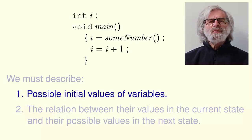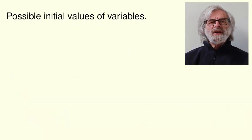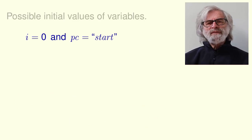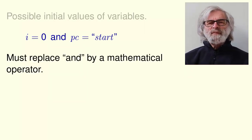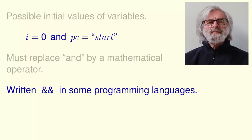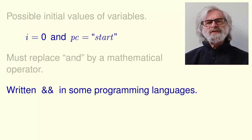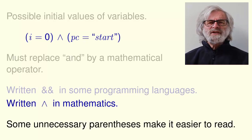Let's start with the initial values. These are the initial values. But we want a mathematical formula. So we must replace AND by a mathematical operator. That operator is written ampersand ampersand in some programming languages. It's written with this symbol in mathematics. Let's add some unnecessary parentheses to make it easier to read.